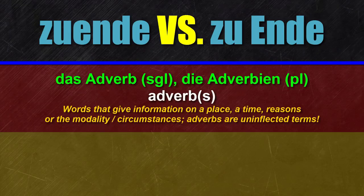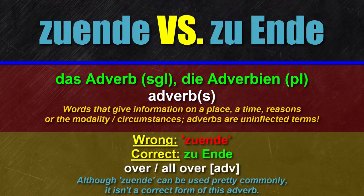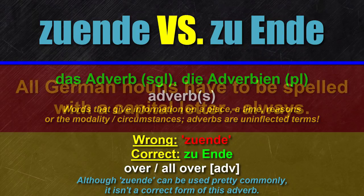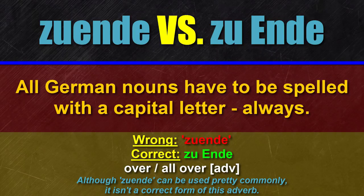When you think of adverbs you'd probably associate this part of speech with a single word. And while this is true most of the time, it doesn't really apply to this case, because zu Ende as one word isn't correct. The German version of 'over' or 'all over' is zu Ende. And please keep in mind to spell Ende with a capital letter, because it relates to the noun das Ende — the end or the ending.